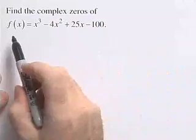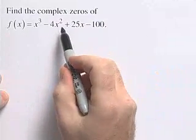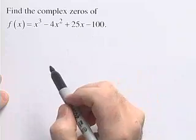For this next problem, we're going to find all the complex zeros for a polynomial function. Here, our function f of x is x cubed minus 4x squared plus 25x minus 100.